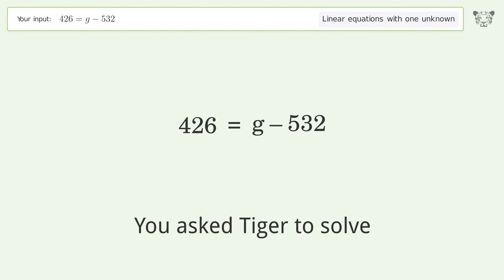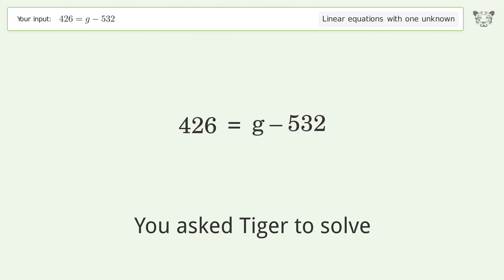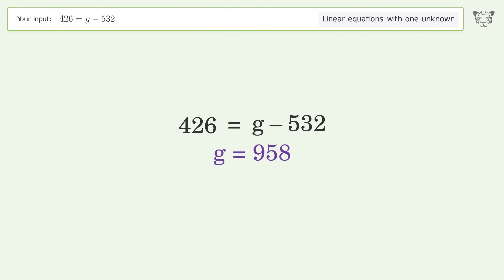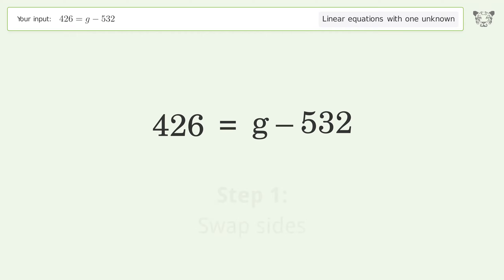Tiger solves a linear equation with one unknown. The final result is g equals 958. Let's solve it step by step — swap sides.